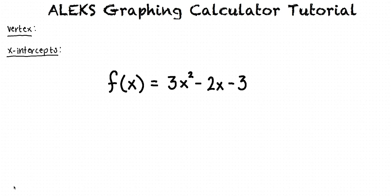Let's take a look at how to use the graphing calculator by working through an example problem. Say we are asked to use the graphing calculator in ALEKS to find the vertex and x-intercepts for the quadratic function f(x) = 3x² - 2x - 3 and round to the nearest hundredth if necessary.